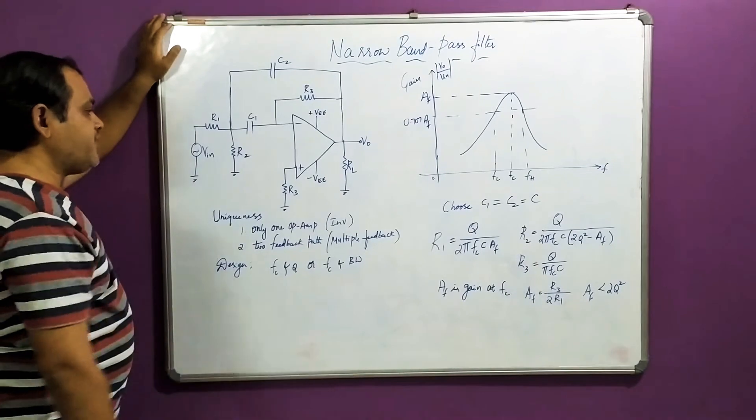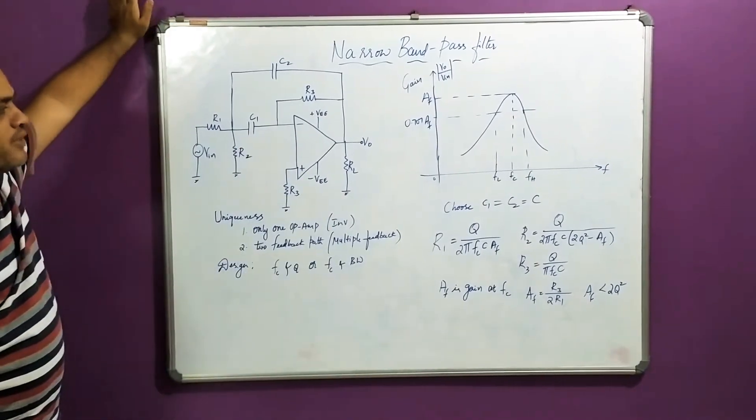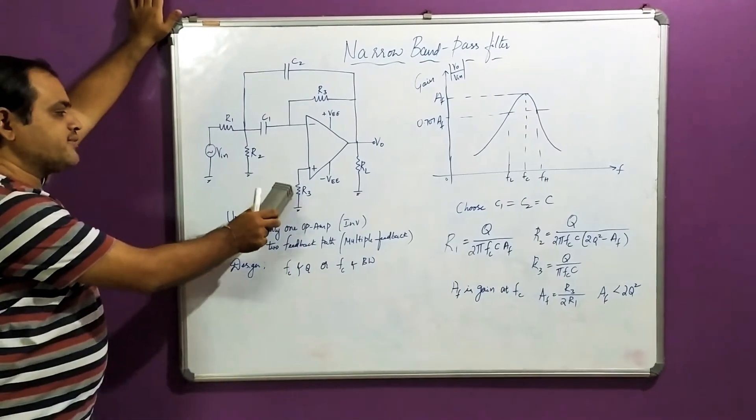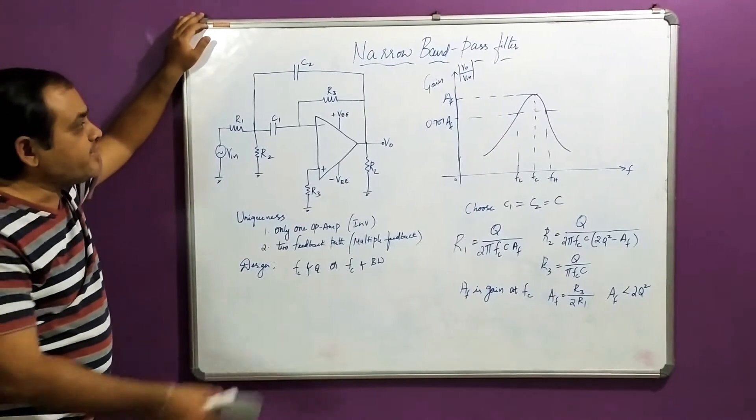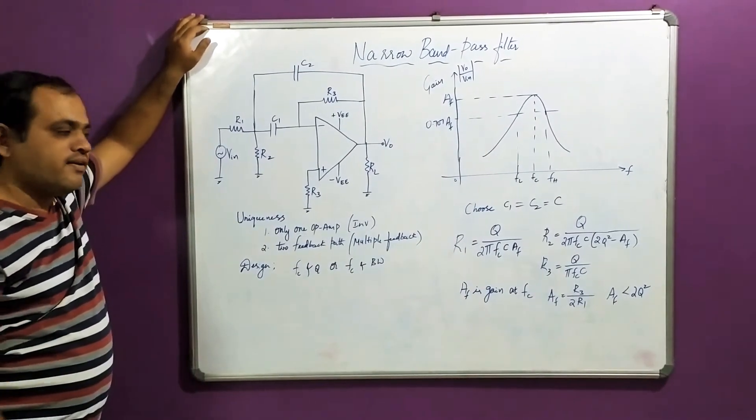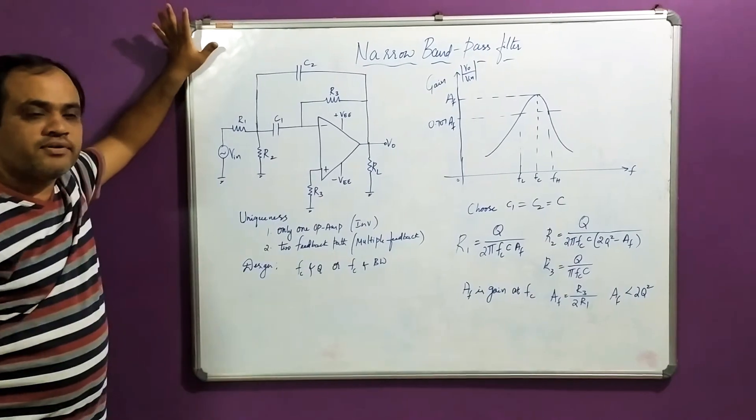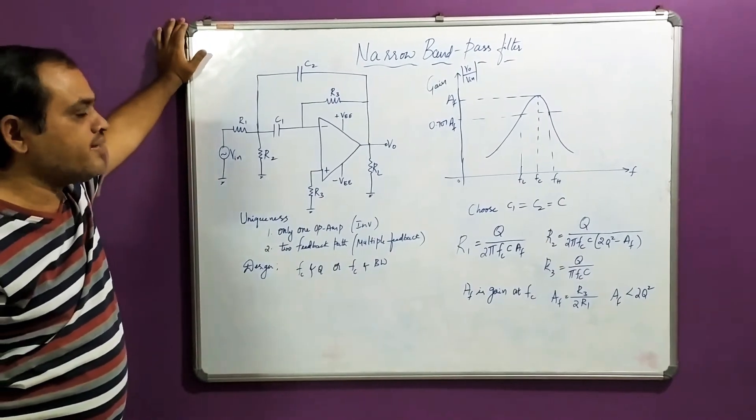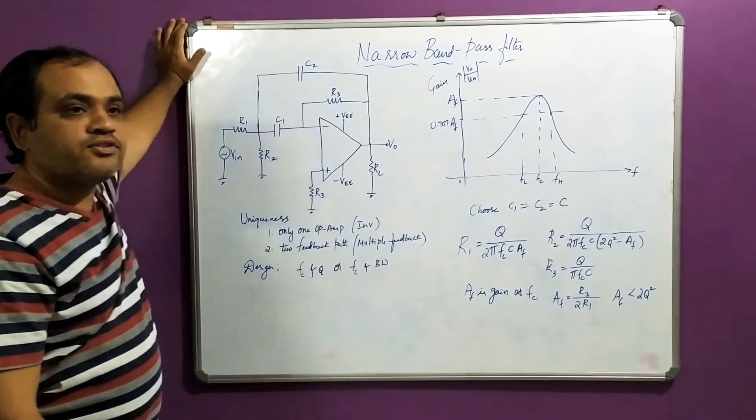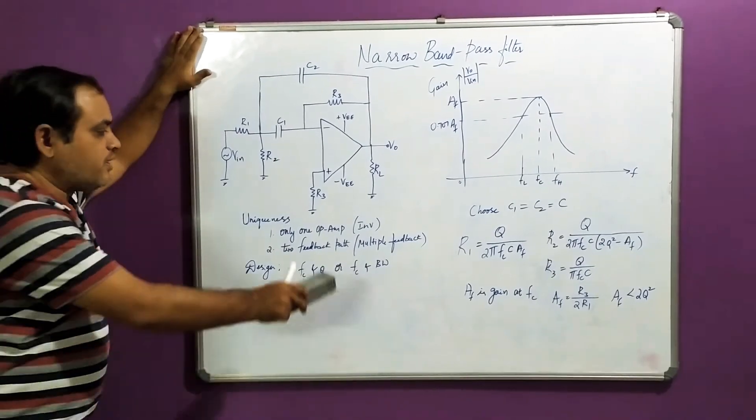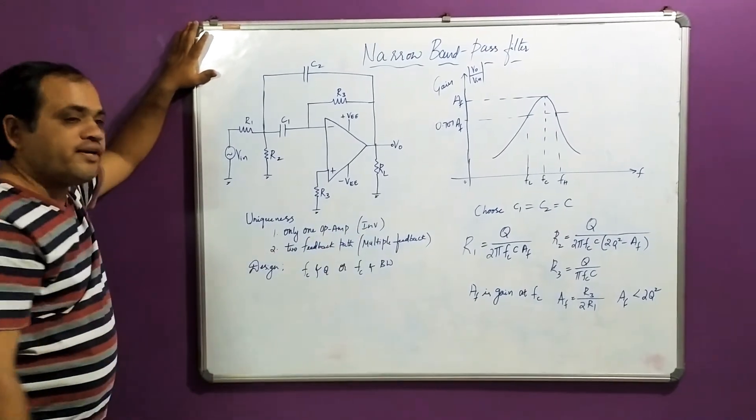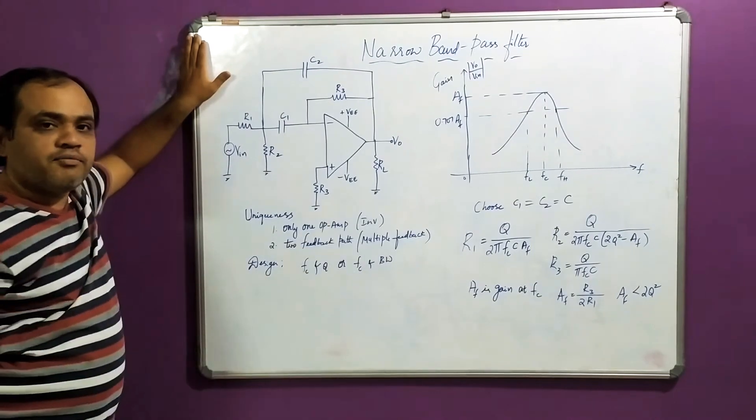How is this obtained? That is decided by this particular circuit. This circuit has a specialty or uniqueness. It has only one op-amp. If you consider wide band pass filter, it uses two op-amps. So this is in inverting mode, or inverting operational amplifier.